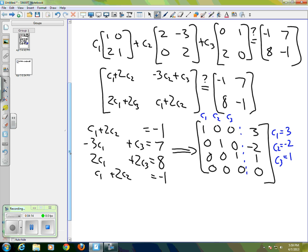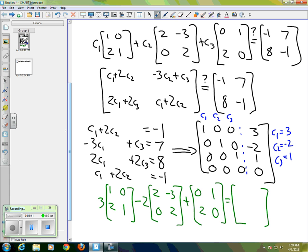So we have C1, again, is 3, so 3 times [1, 0; 2, 1], minus 2 times our second matrix, which is [2, -3; 0, 2], and then plus the third matrix, [0, 1; 2, 0],